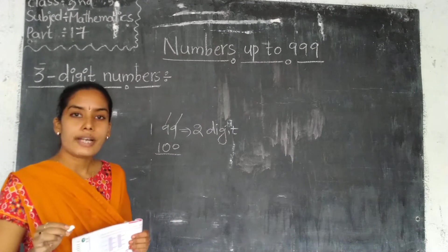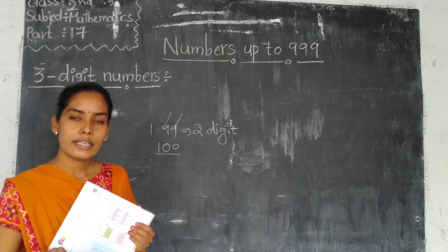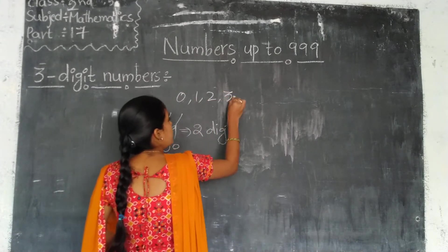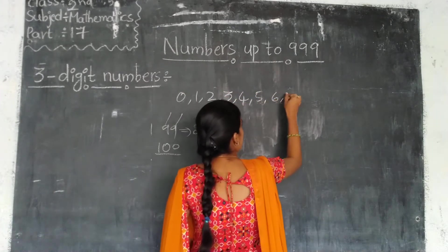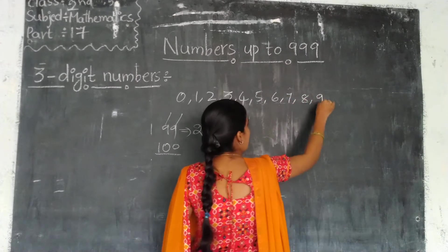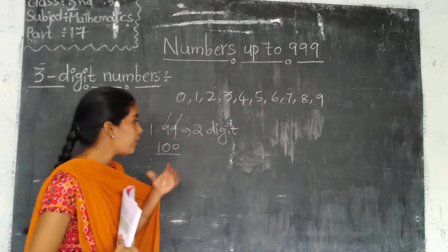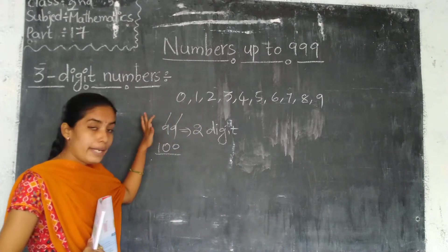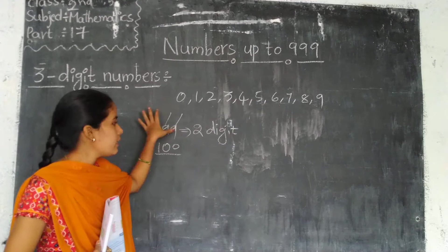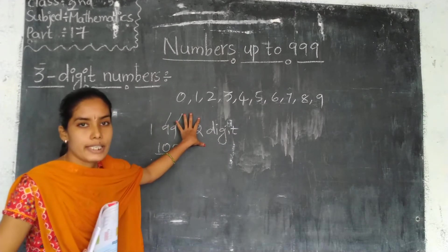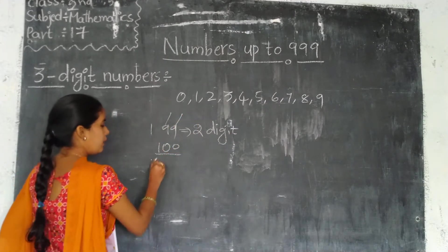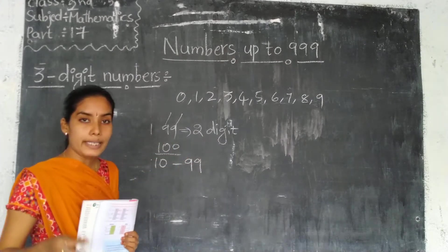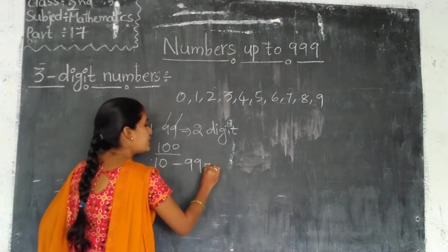Haven't we learnt 1-digit numbers? Yes, we already know 1-digit numbers: 0, 1, 2, 3, 4, 5, 6, 7, 8, 9. These are the single digit or 1-digit numbers. And from 10 to 99 — 10, 11, 12, 13 — like that up to 99, those are the 2-digit numbers.